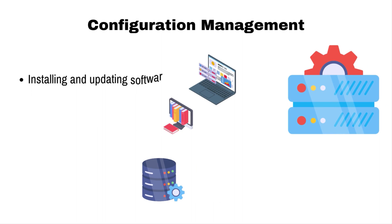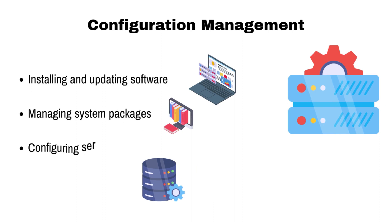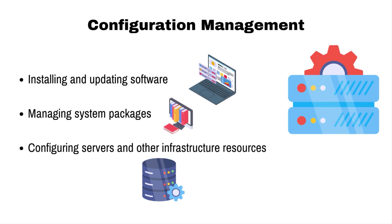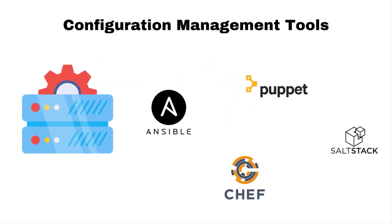Configuration management is the process of maintaining and controlling the configurations of infrastructure resources in an organized and predictable way. This includes tasks such as installing and updating software, managing system packages, and configuring servers and other infrastructure resources. Examples of configuration management tools include Ansible, Chef, Puppet, and SaltStack. These tools allow you to define the desired state of your infrastructure using configuration files or scripts, and then use the tools' command line interfaces to apply those configurations. Configuration management tools can be used in conjunction with IAC tools such as Terraform to provide a complete solution.